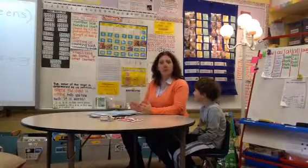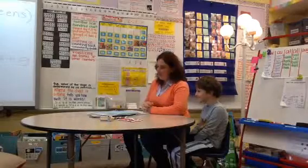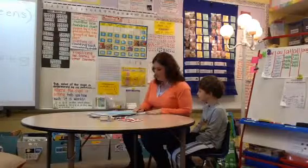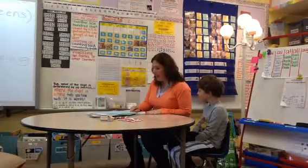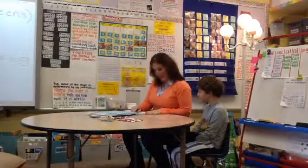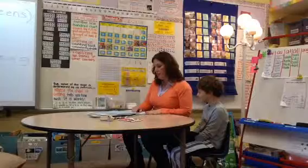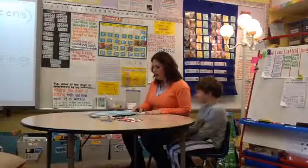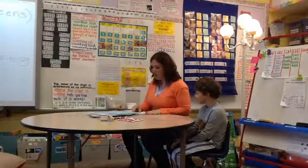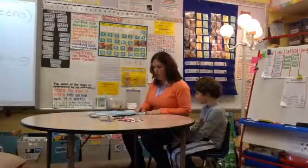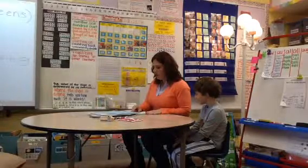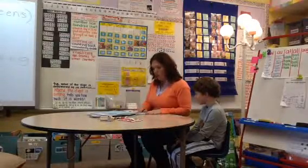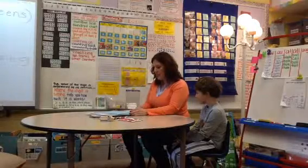Today I want to dig a little deeper into conceptual understanding of the Common Core 1.NBT.4, which states: Add within 100, including adding a 2-digit number and a 1-digit number, and adding a 2-digit number and a multiple of 10 using concrete models or drawings and strategies based on place value, properties of operations, and the relationship between addition and subtraction. Relate the strategy to a written method and explain the reasoning used. Understand that in adding 2-digit numbers, one adds tens and tens, ones and ones, and sometimes it is necessary to compose a ten.